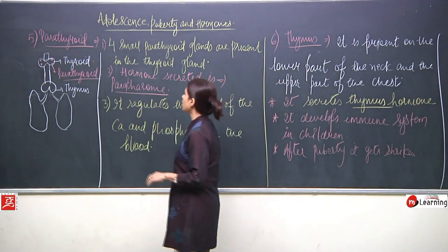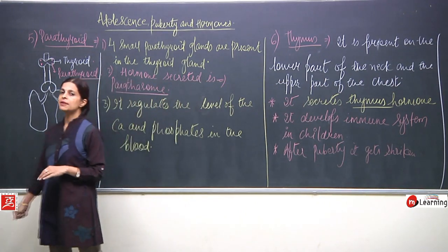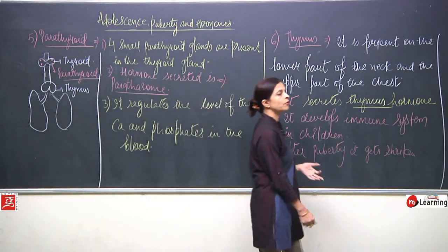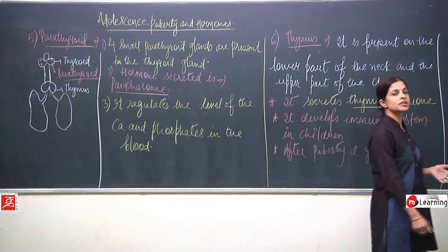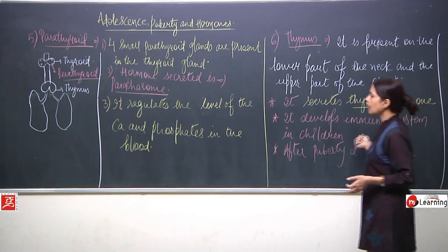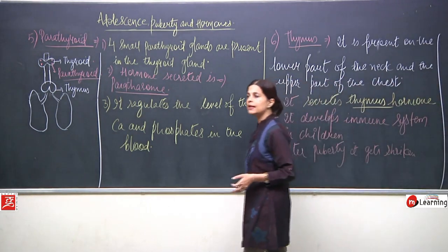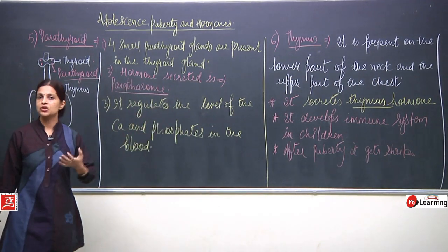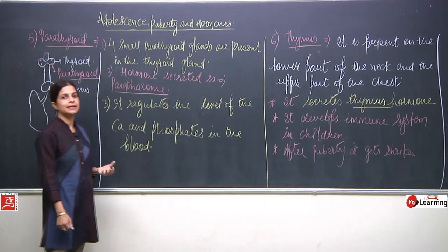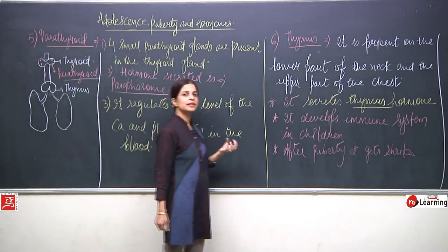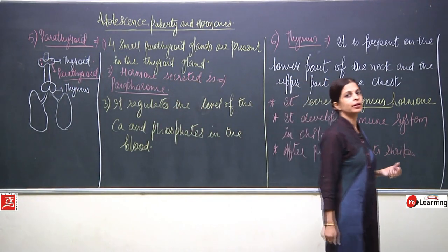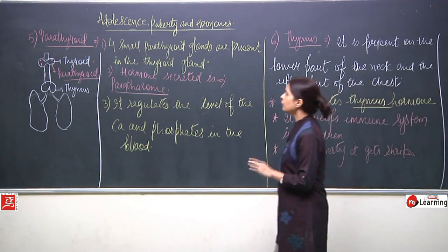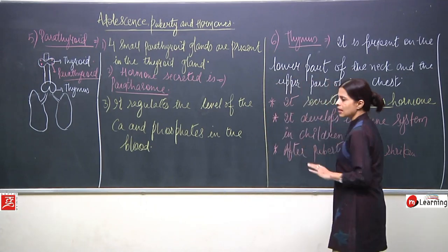After puberty, in the adolescent stage, the thymus gland shrinks and does not work as it did during childhood. So thymus develops the immune system in children and later shrinks up.